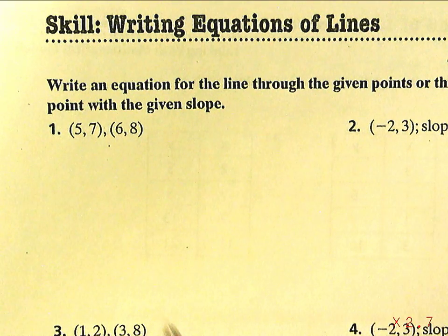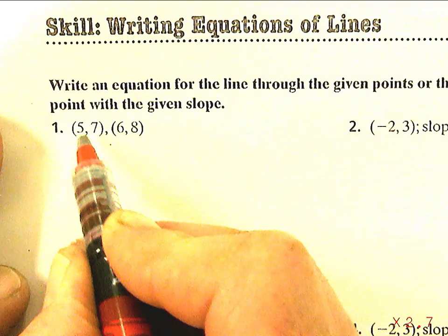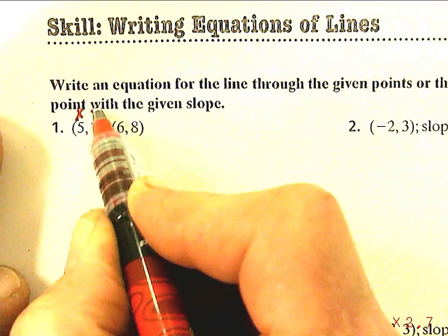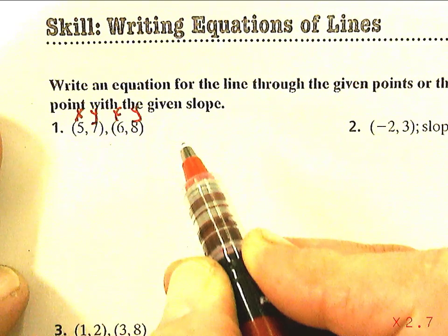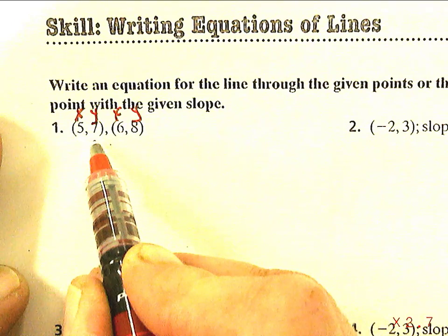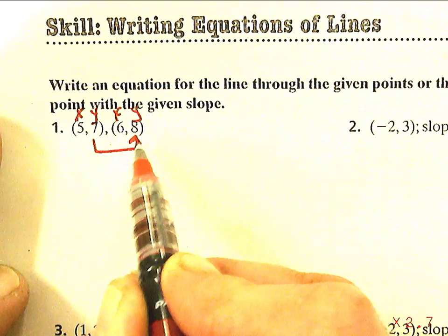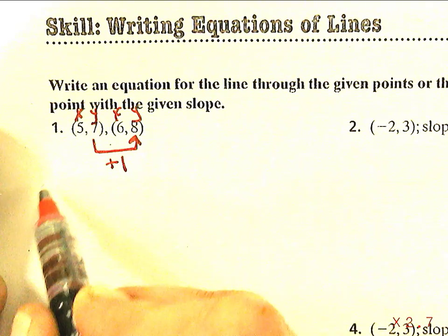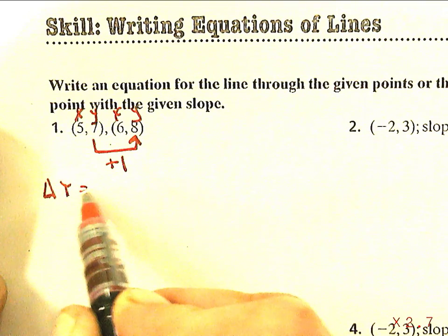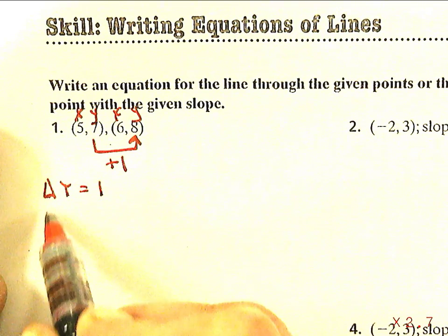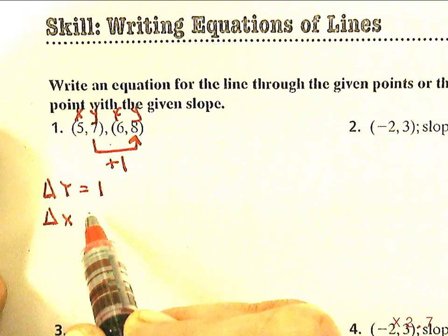We're going to take these two points. If you think about these two points, we have x=5 and y=7 for the first point, and x=6 and y=8 for the second. The change in the Y values: the Y values go up 1, so my change in Y is 1. And the change in X values goes from 5 to 6, so it goes up 1.